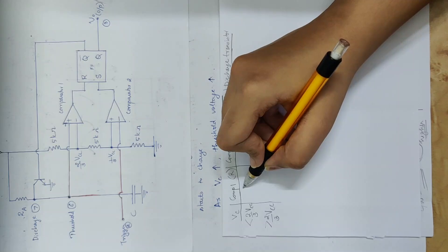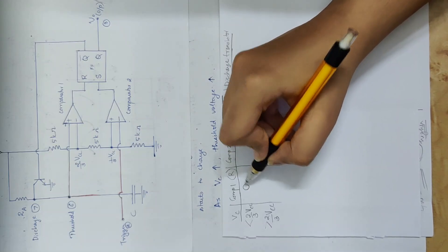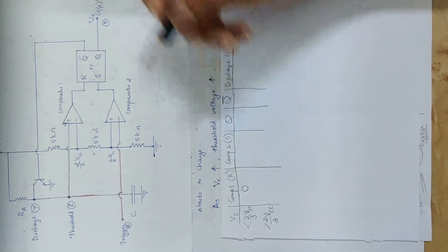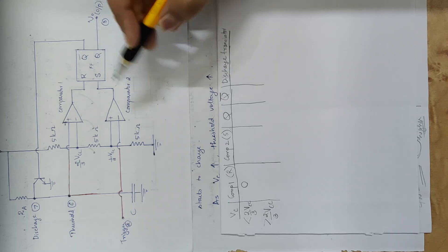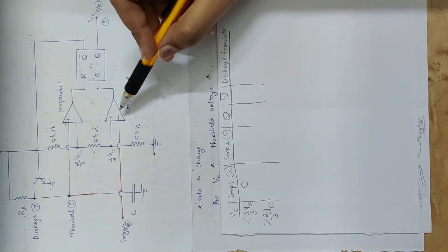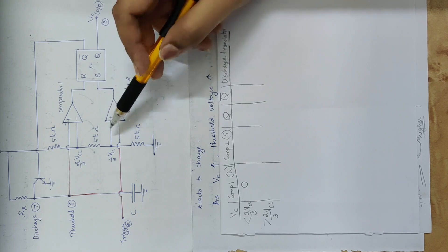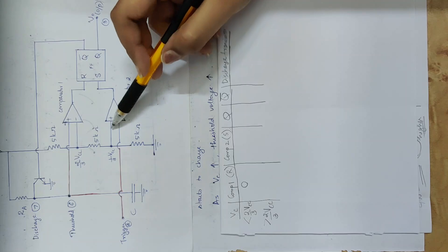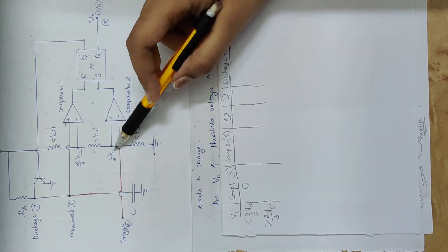When the capacitor voltage is less than 2/3 Vcc, the output is low. Comparator 1 output is low, that is 0. The R value is 0. The S value is comparator 2's output. The threshold is 1/3 Vcc.